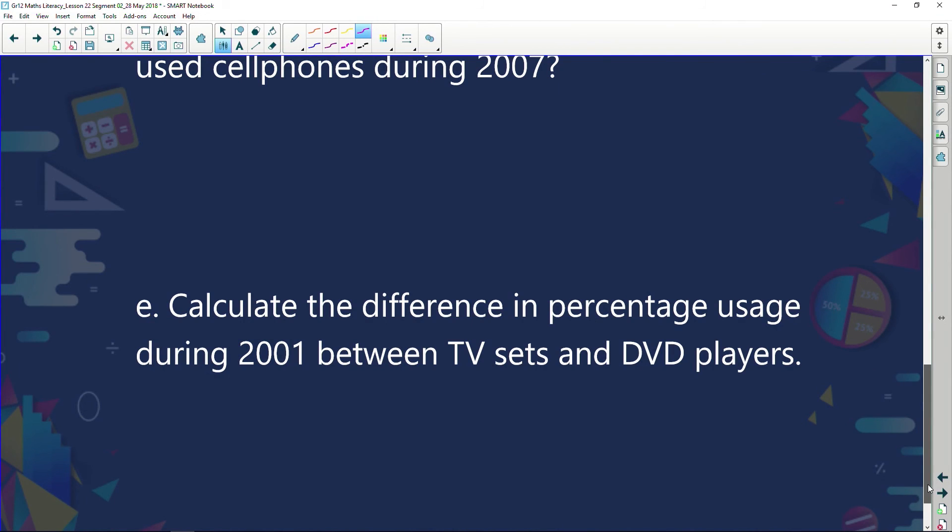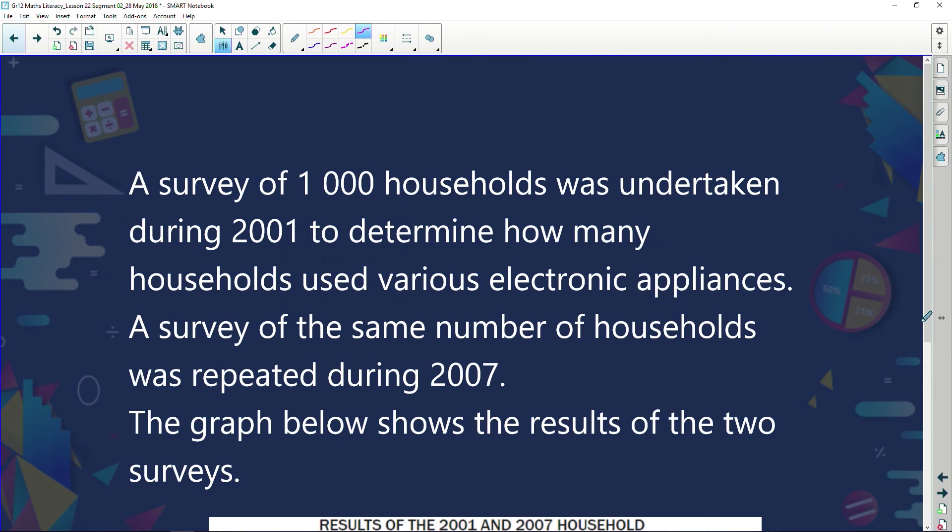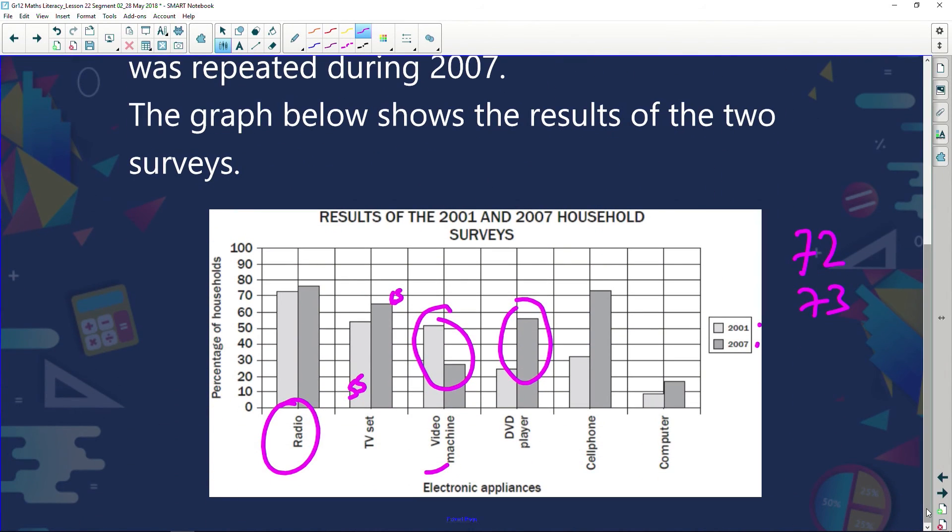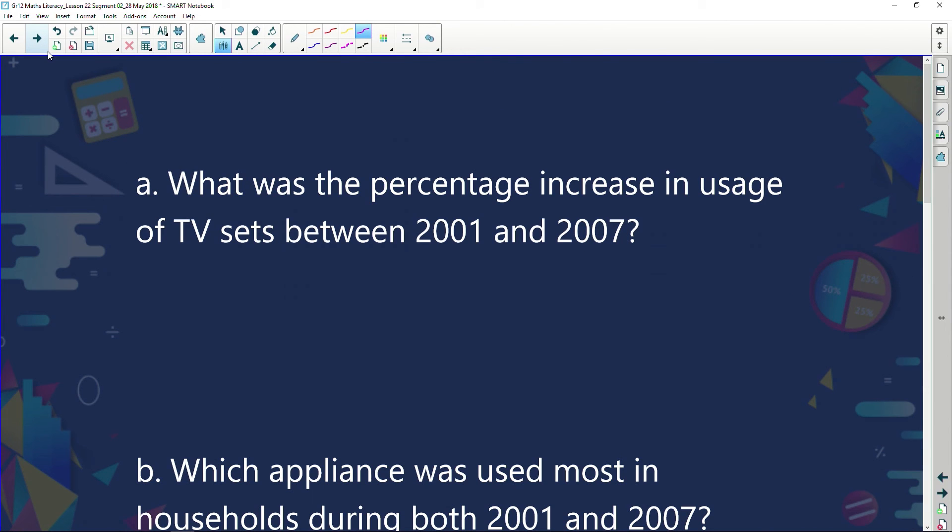Next one. Calculate the difference in percentage usage during 2001 between TV sets and DVD players. So now all we're interested is 2001 and we're looking at TV sets and DVD players. So looking at the difference in 2001, which is our white box, we can see there were 55% of households had TVs and DVD players. What's that? Just around about 25% had DVD players. So the difference, 55% minus 25%, the difference was around about 30%.